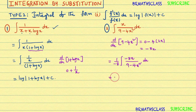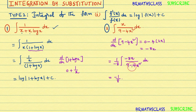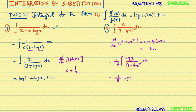That equals −1/8 times the integral of (−8x)/(9 − 4x²) dx. Observe that the derivative of (9 − 4x²) is −8x, so the numerator is the derivative of the denominator. This is of the form ∫f'(x)/f(x) dx. We can write the answer directly as −1/8 · log|9 − 4x²| + c.